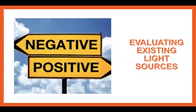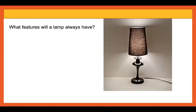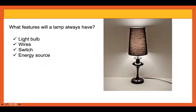Then we're going to look at your evaluation of the existing light sources. Pause the screen and answer this question: what features will a lamp always have? A lamp always has certain things. Write down on your piece of paper what all lamps should have. Once you finish that, go on to Purple Mash and fill in the two quiz for DT lesson one.